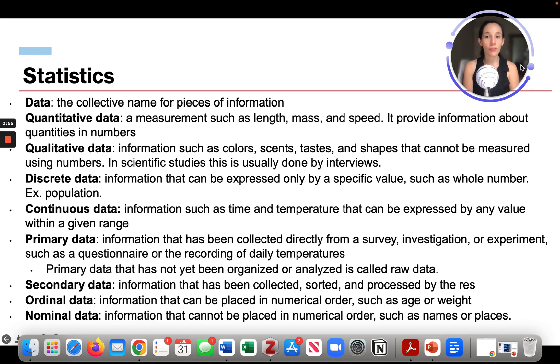Discrete data is information that can be expressed only by a specific value, such as a whole number. An example is population. Continuous data is information such as time and temperature that can be expressed by any value within a given range.